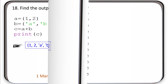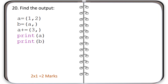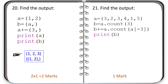Question number 20: see the code and find the output. The correct output is shown. Question number 21: see the code and find the output. The correct output is shown.